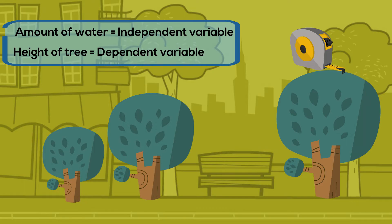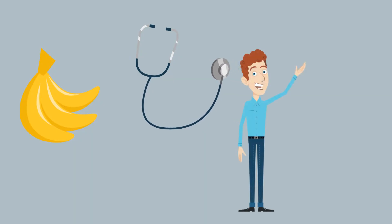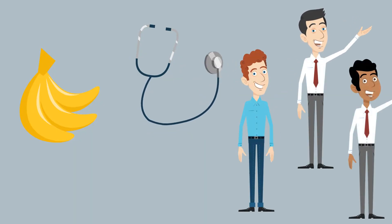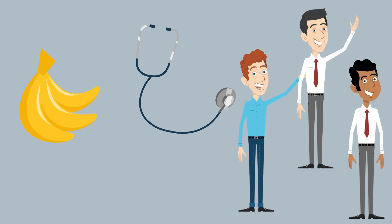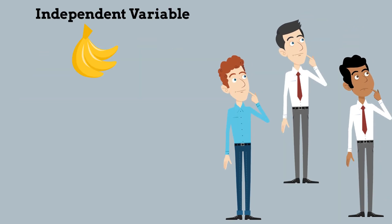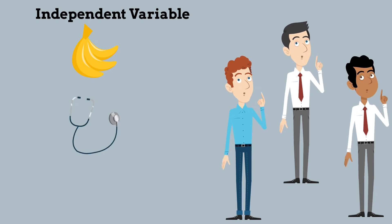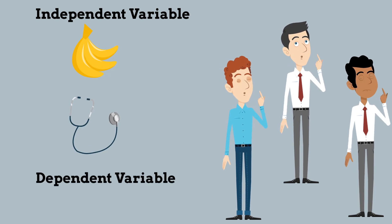Another example: will eating five servings of bananas a week reduce the blood pressure in male patients? The number of bananas that the patients eat each week will be the independent variable because it will change, and the blood pressure is the dependent variable because it is what you are measuring.